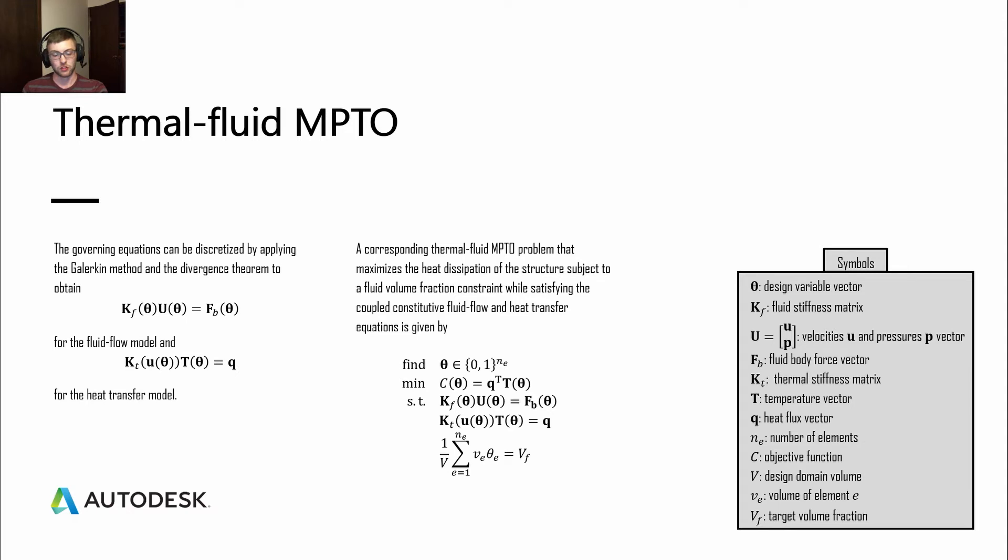We can put this into a thermal fluid optimization problem that maximizes the heat dissipation of the structure subject to a fluid volume constraint. It also must satisfy the constitutive governing equations for fluid flow and heat transfer on the left-hand side. This equation can be written out as we have here. We're trying to find the design variables, the fluid fraction theta. We're minimizing the objective function C, which is Q transpose times T. This is to maximize the heat dissipation of the structure. And then we have our constraints as listed.